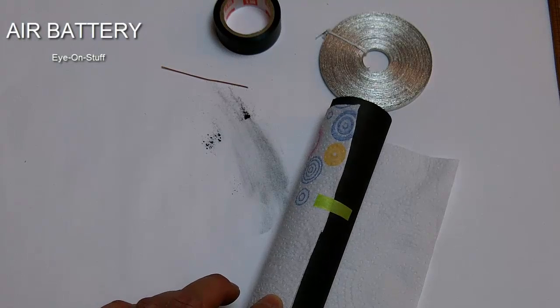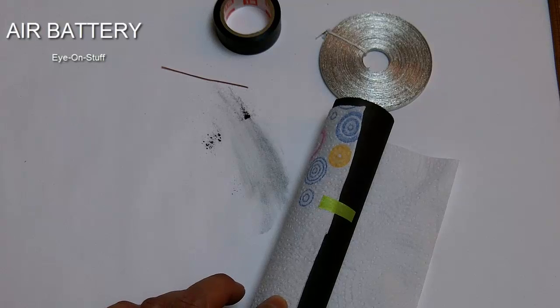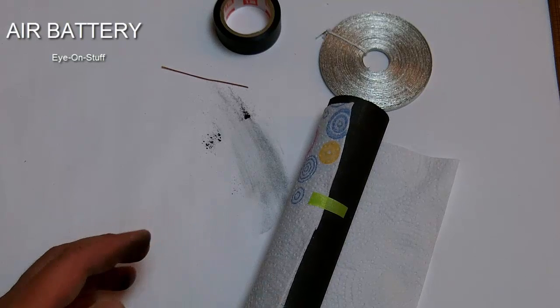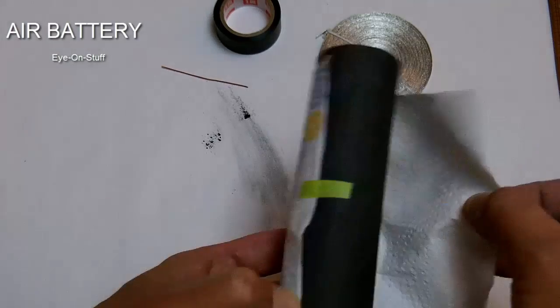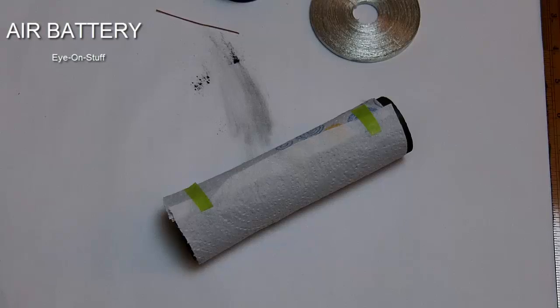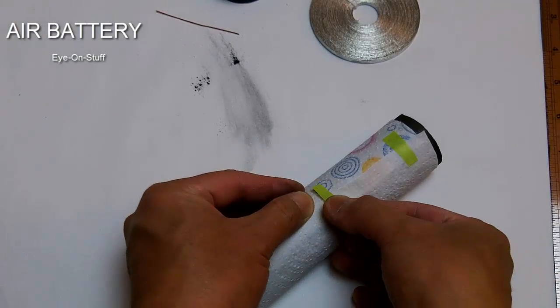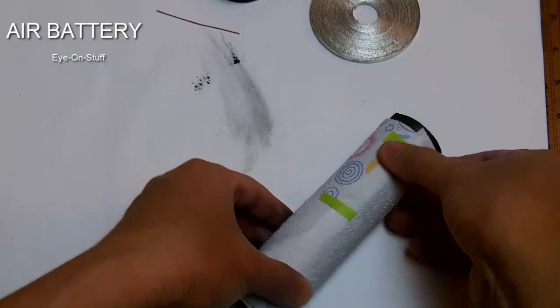I started the wrapping of the paper towel over the carbon rod. I just put a little piece of tape. I have a third piece of tape. I'm going to place it over here.